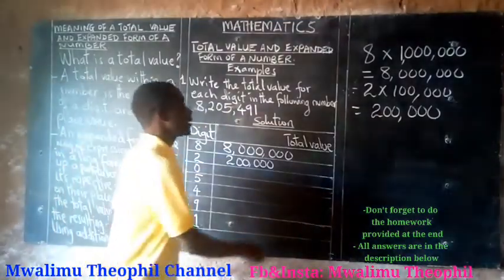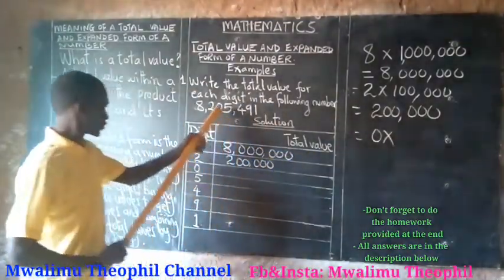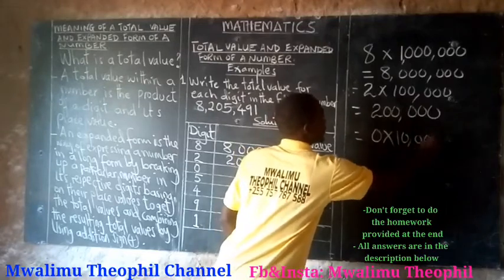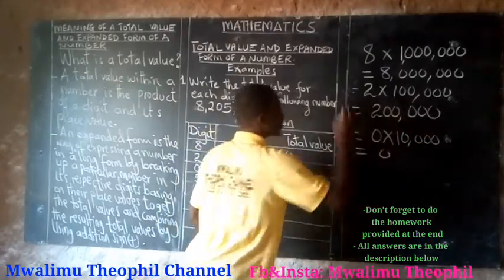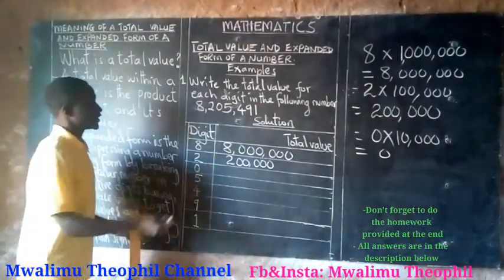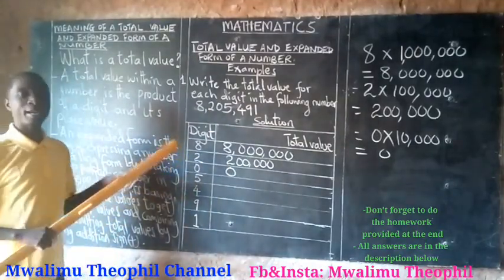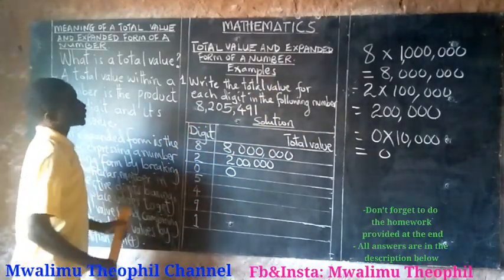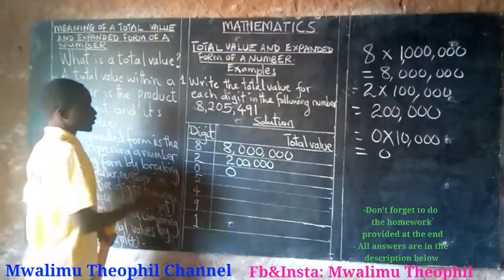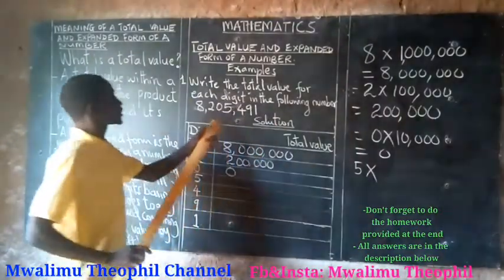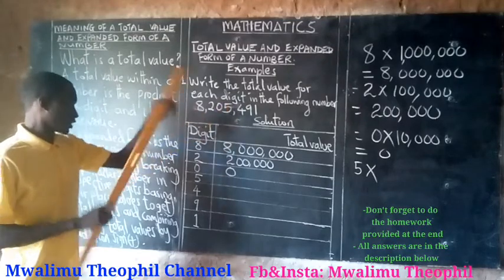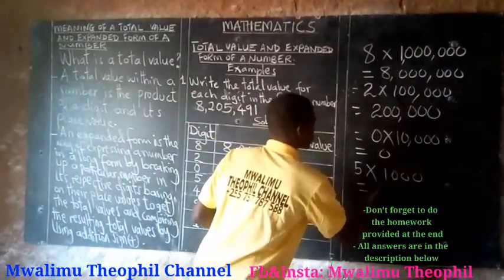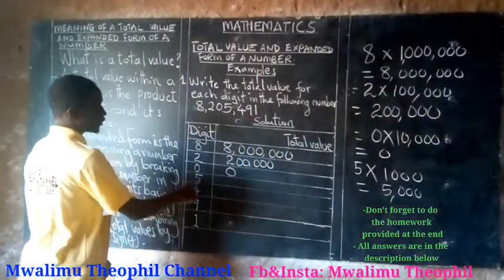Now we move to the third digit, which is 0. To get its total value it will be 0 times its place value. The place value of 0 here is ten thousand, so we multiply by ten thousand — and we get zero. The total value of zero in any number is zero, because when you take zero times any value you get zero. The next digit is 5; its total value will be 5 times one thousand, which equals five thousand.